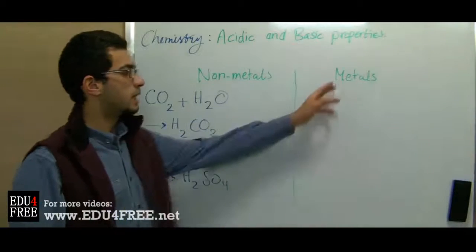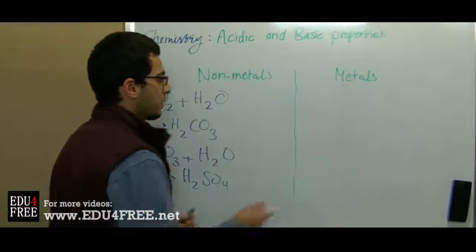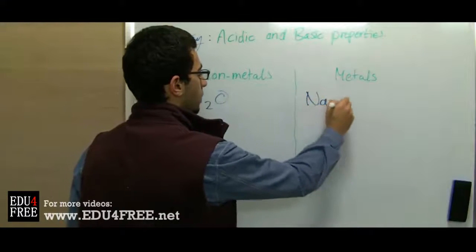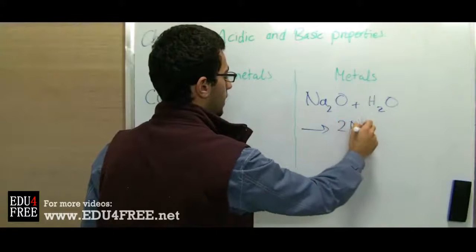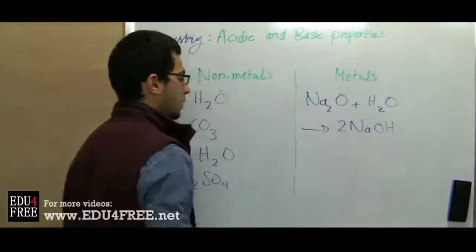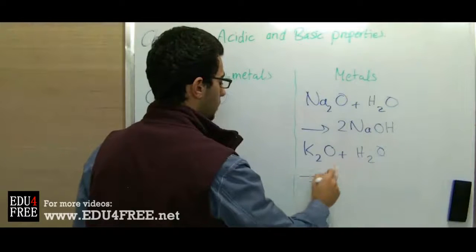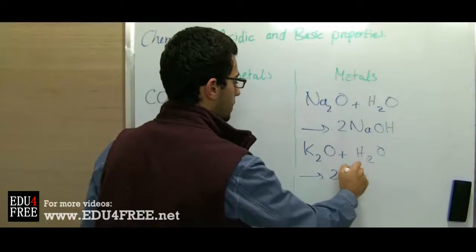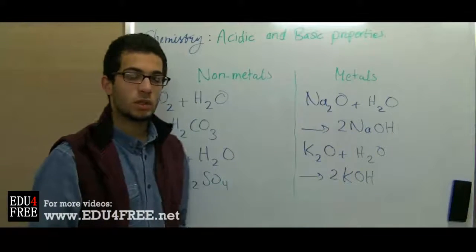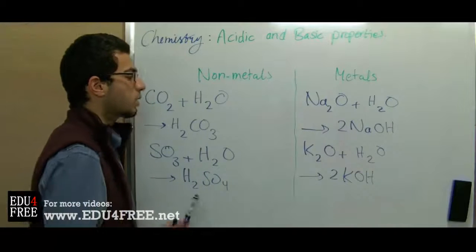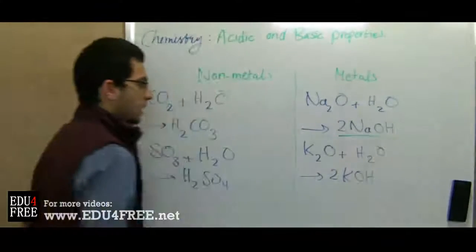On the other hand, when metallic oxides react with water, bases are produced. For example, when sodium oxide reacts with water, it produces sodium hydroxide. When potassium oxide reacts with water, potassium hydroxide is also produced. The bases which are soluble in water are called alkalis, like sodium hydroxide.